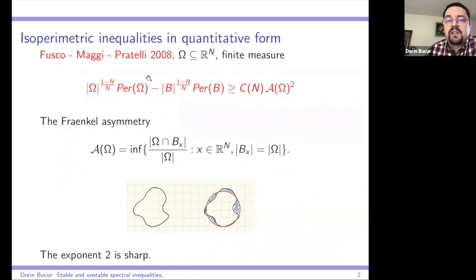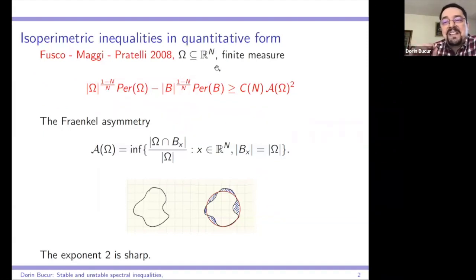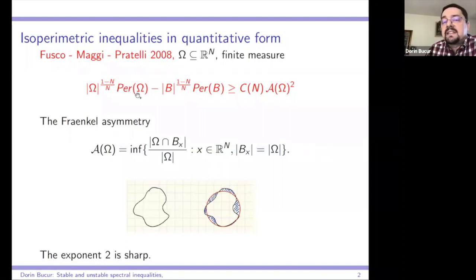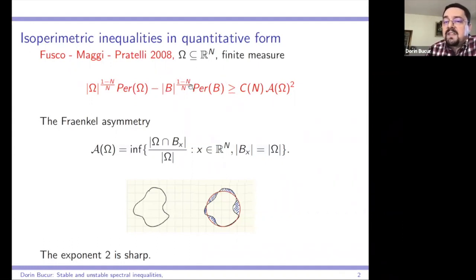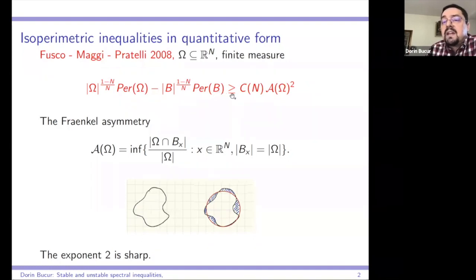They proved a quantitative version of the classical isoperimetric inequality, which reads as follows. Omega is a measurable subset of R^n with finite measure. The classical isoperimetric inequality states that the perimeter of omega is larger than or equal to the perimeter of the ball of the same measure. This inequality can be made quantitative: the difference between the perimeter of omega and the perimeter of the ball is greater than or equal to some constant times the so-called Fraenkel asymmetry squared.